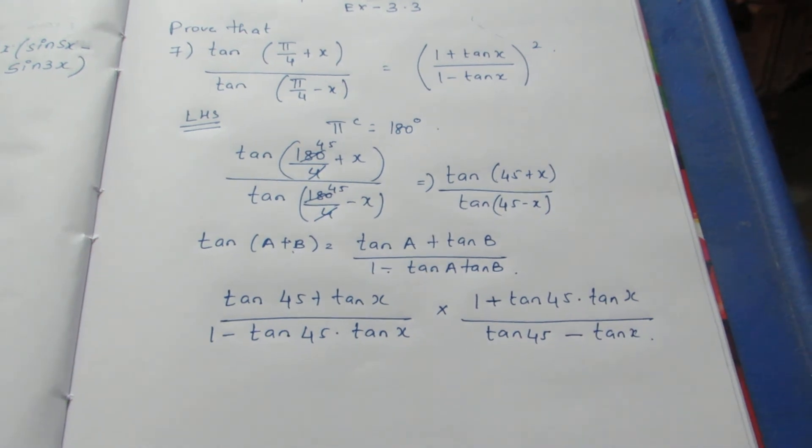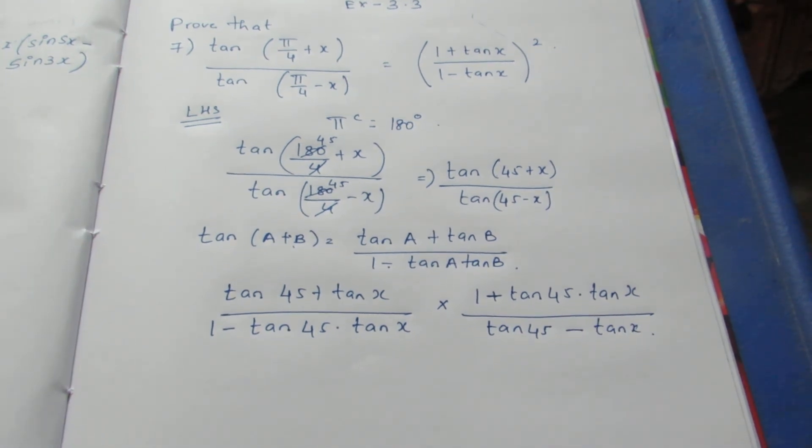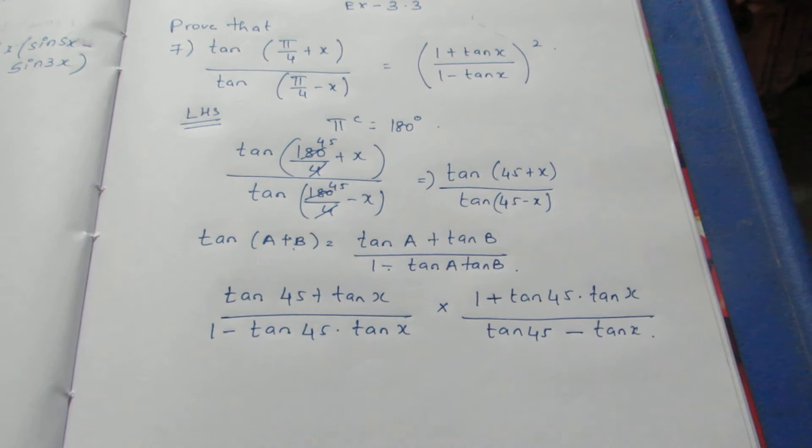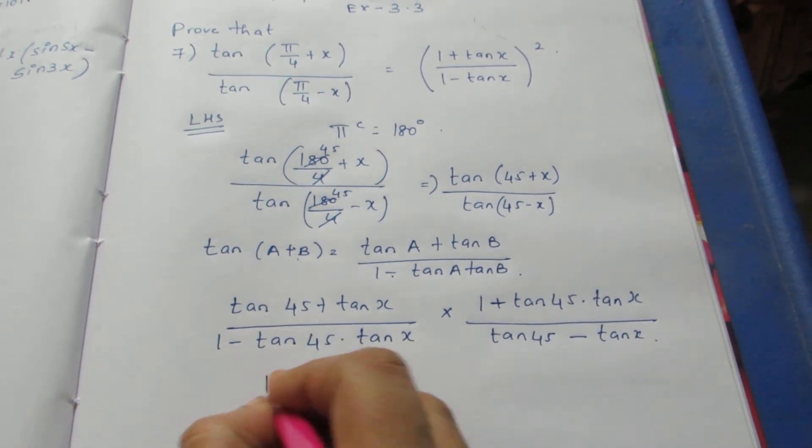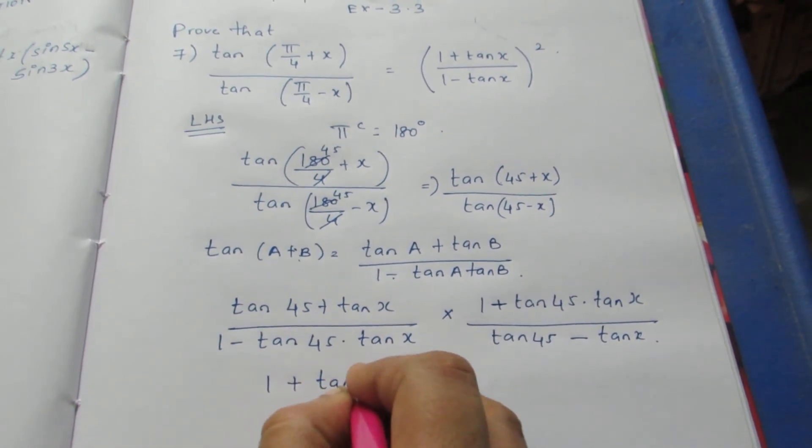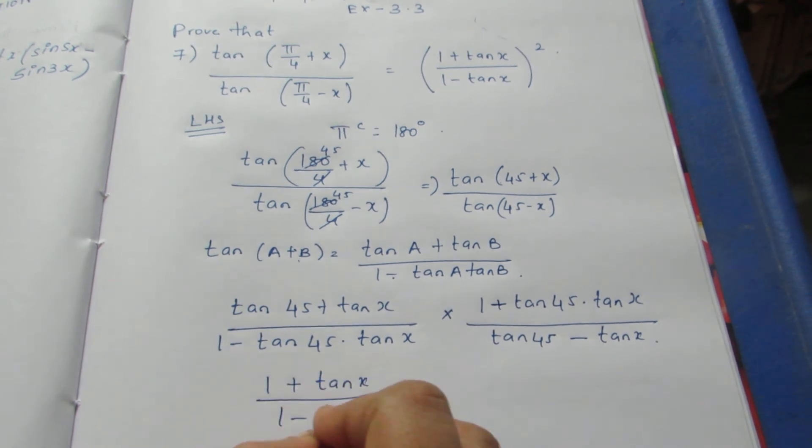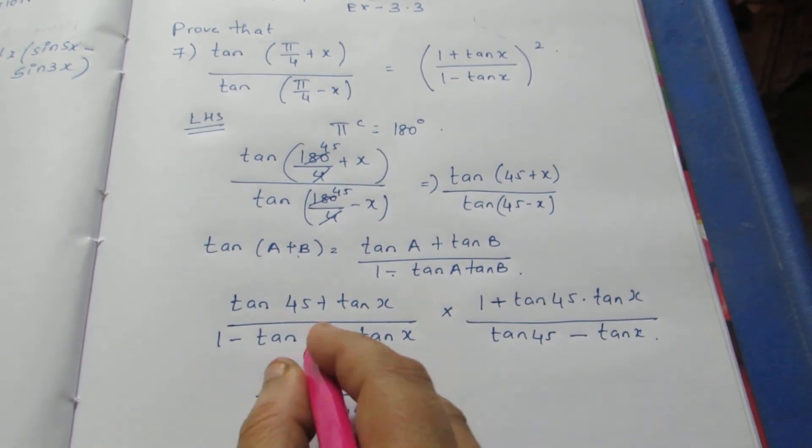I can substitute the value of tan 45 because only thing I know is tan 45. I don't know the value for tan x. So this becomes (1 + tan x) by (1 - tan x) because here it becomes 1.